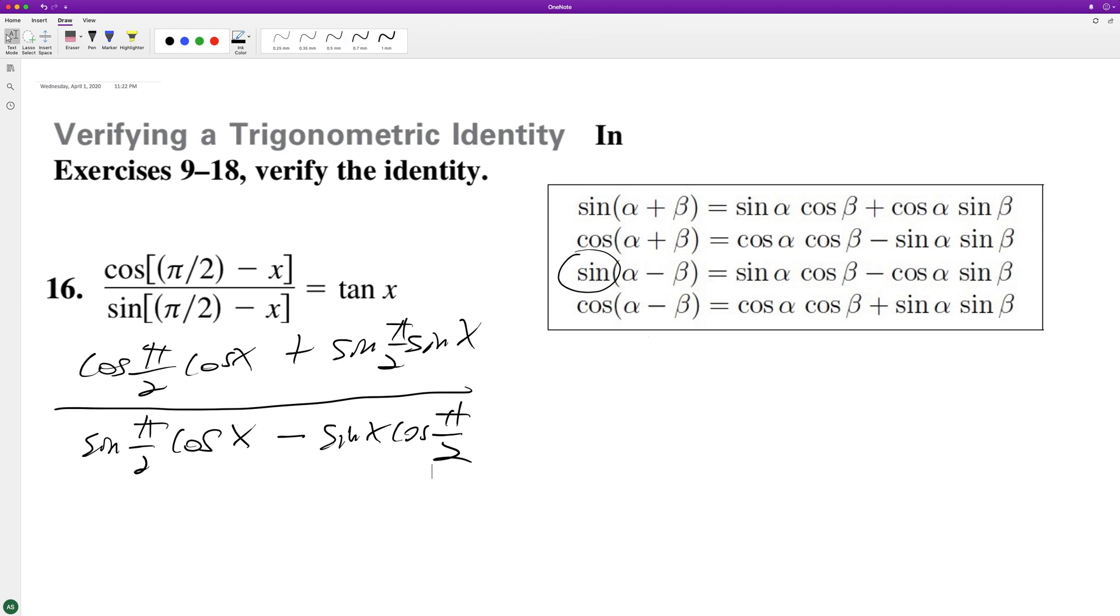So over here, cosine of pi over two is equal to zero. So we end up with zero plus sine of x, because sine of pi over two is one, over cosine of x, because sine of pi over two is one times cosine minus zero. This ends up being sine of x over cosine of x, which is equal to tangent of x.